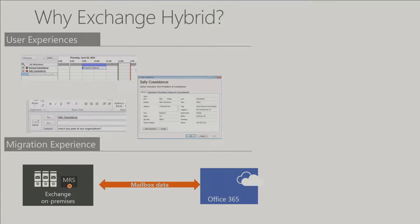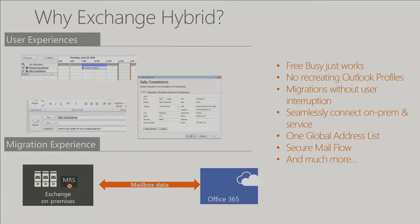Hybrid is the only option you have for actually off-boarding a mailbox. If you want to move a mailbox from on-premises back to Office 365 using native tools, you use hybrid. There are third-party tools that can do it, but it's the only native option — no cutover migration or staged migration allows you to off-board a mailbox. Once you move a mailbox to the cloud, free/busy continues to work.